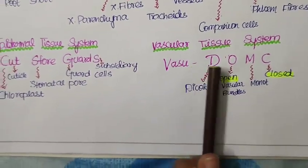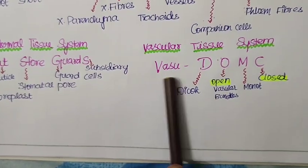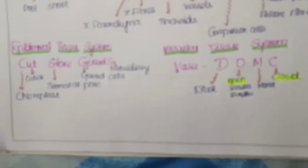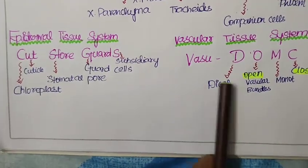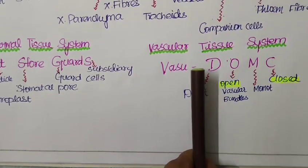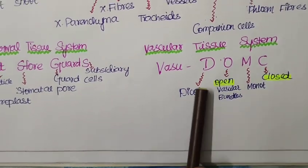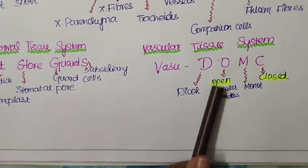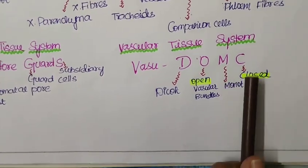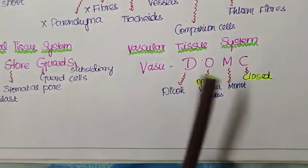Now to talk about the vascular tissue system. Vasu do MC. The teacher is asking Vasu to do maths and chemistry. So in short trick it is MC, do MC. Here in dicot we can see the open vascular bundles. And in monocot we can see the closed vascular bundles. This is the example for that.